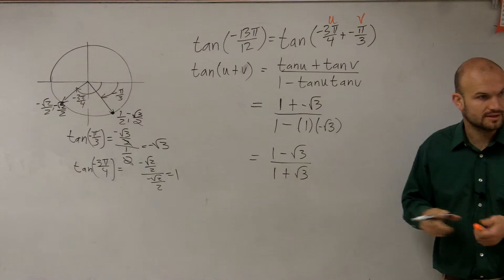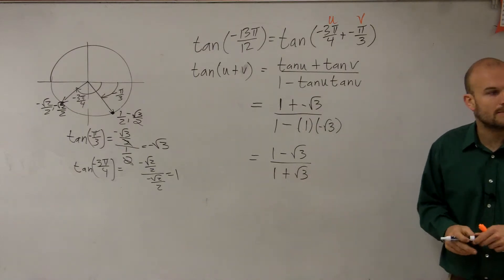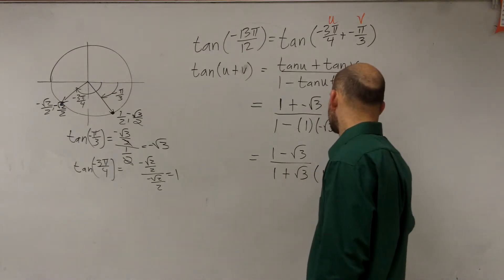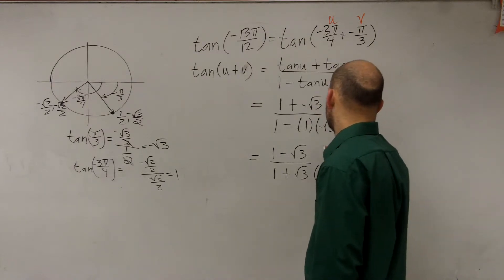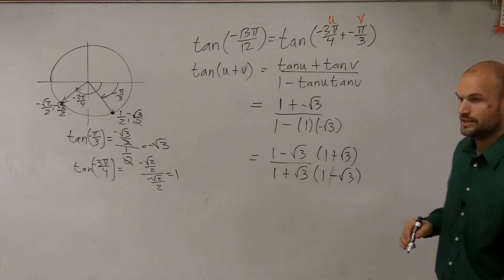Now what we need to do is rationalize the denominator to get our radical off the bottom and get it as a monomial. We'll multiply by the conjugate.